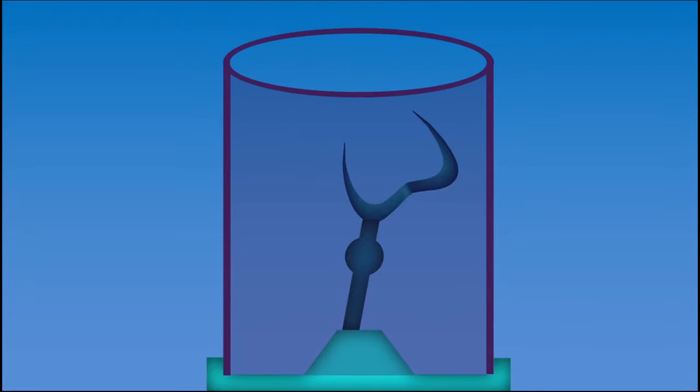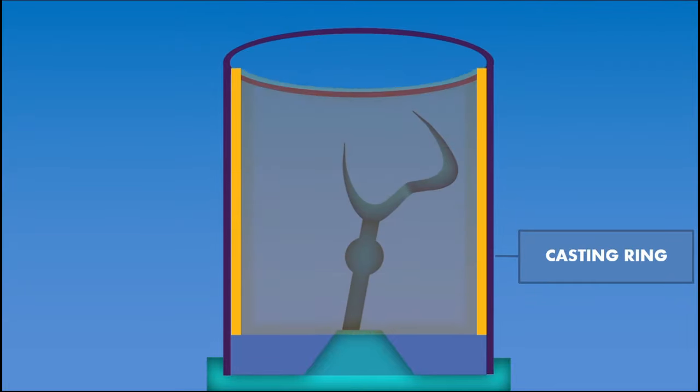Once it is aligned, a casting ring liner is placed inside the casting ring. This casting ring liner will get burned out along with the wax during the burnout process. This will create some space which will be utilized for expansion of the investment. All metals when solidified from a liquid state will undergo shrinkage. This expansion of the investment is essential to compensate for the metal shrinkage.